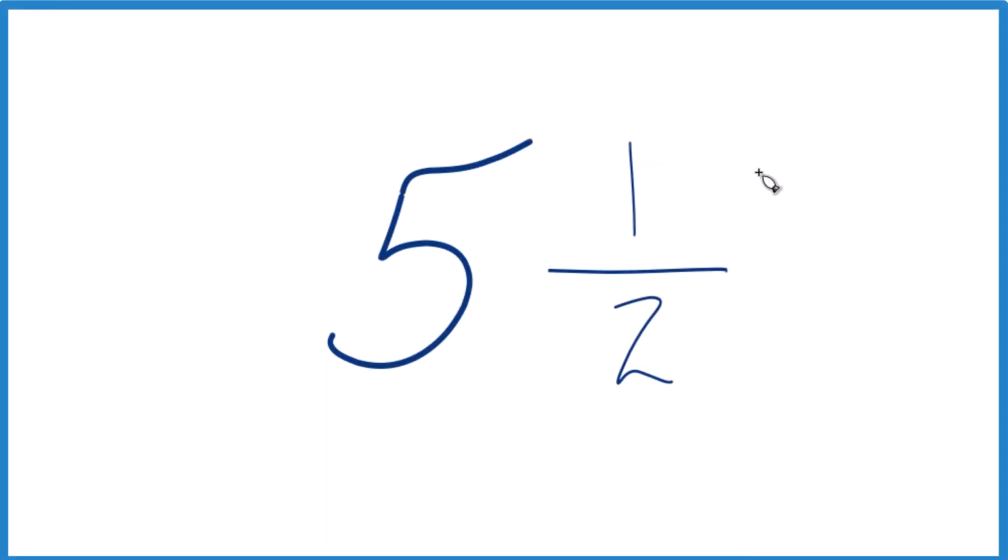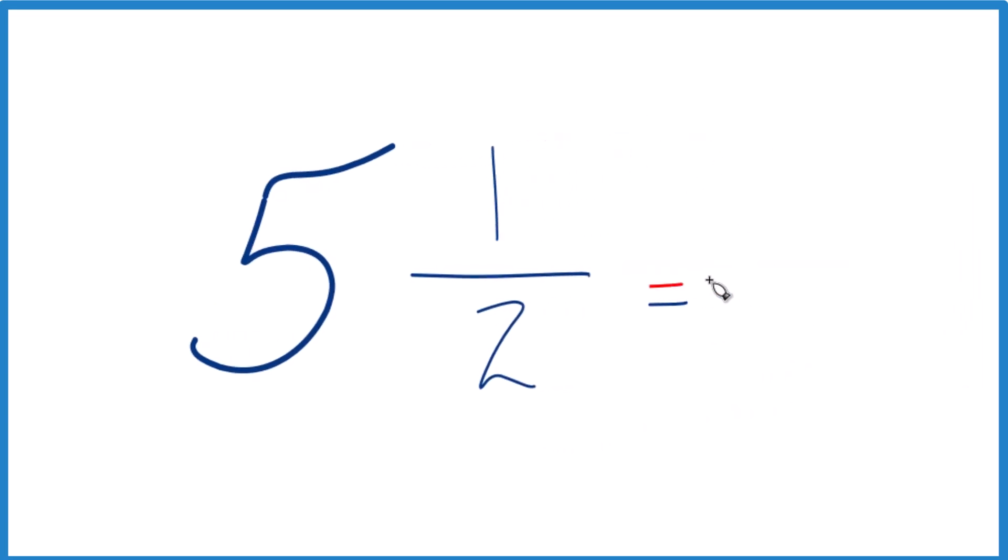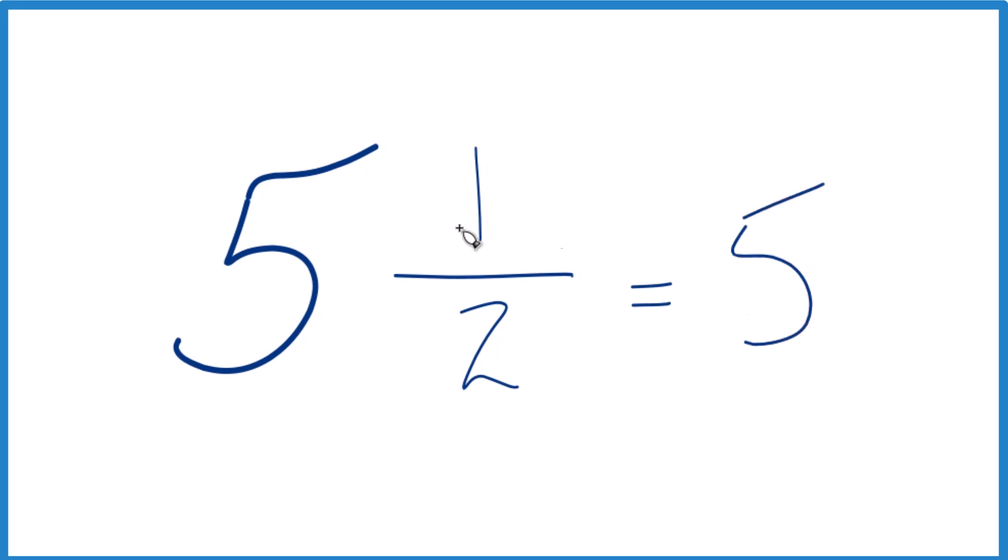All right, let's write five and one-half as a decimal. Probably the easiest way to do this is to think about it as five point something. So we have the five here. All we really need to do is convert one-half to a decimal.